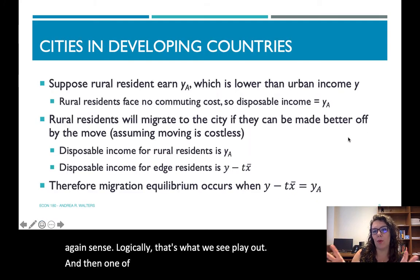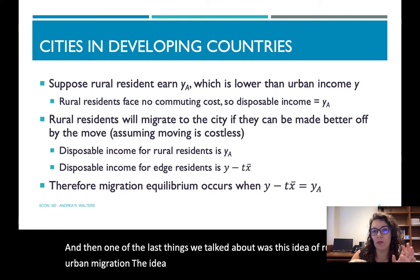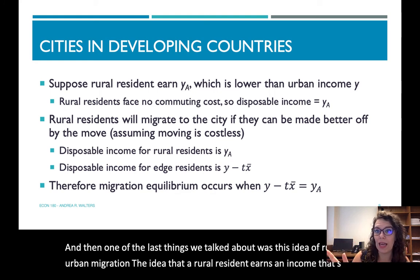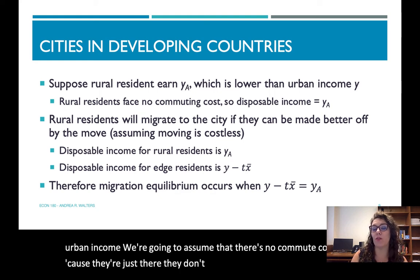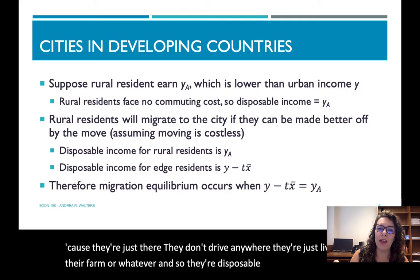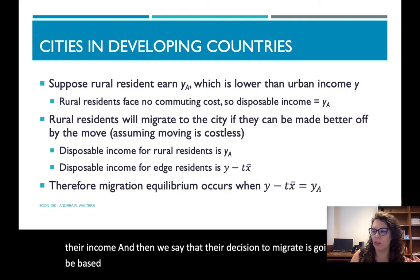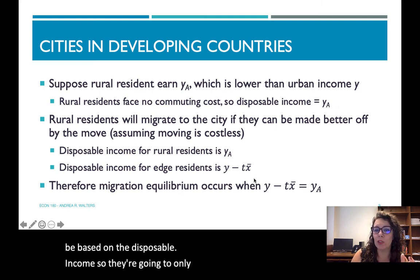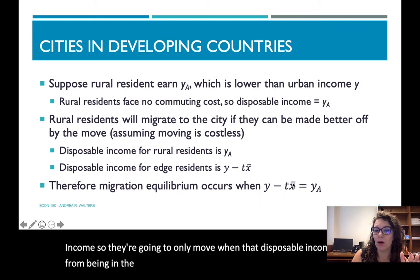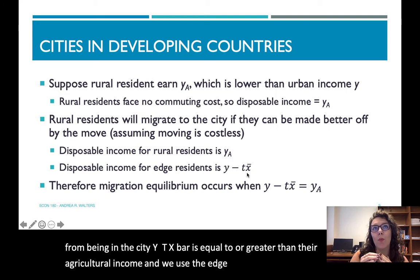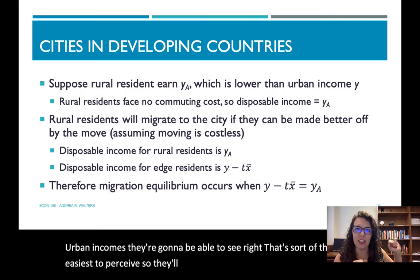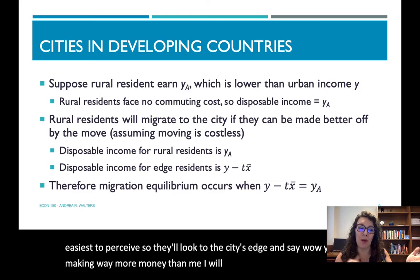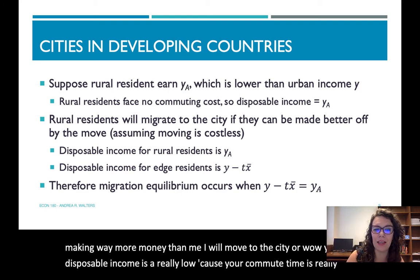One of the last things we talked about was rural-urban migration. A rural resident earns agricultural income Y_A — assumed lower than urban income — with no commute cost, so disposable income equals their income. Their decision to migrate is based on disposable income: they'll only move when Y minus TX-bar is equal to or greater than their agricultural income. We use the edge resident's income because that's what rural residents can perceive — they look to the city's edge and compare disposable incomes. If the edge resident's commute is very long, the rural resident may choose to stay.